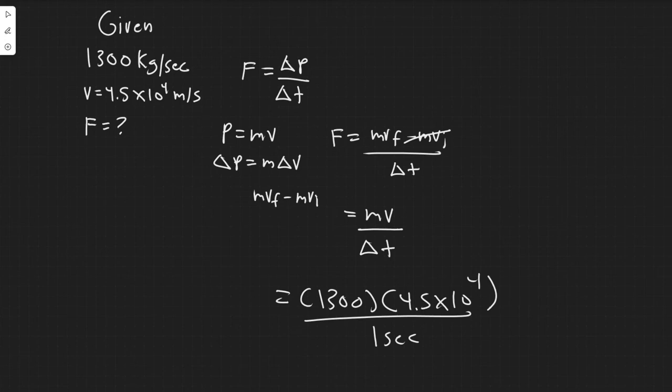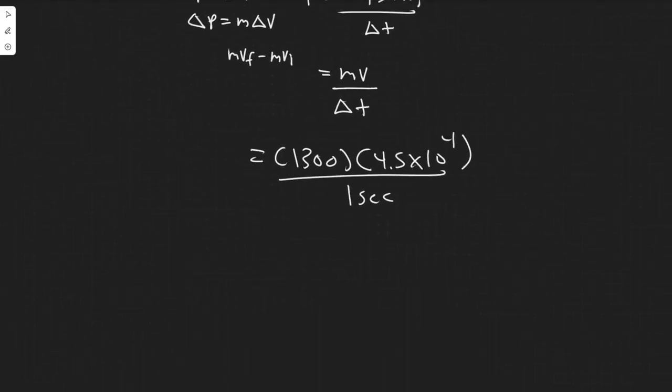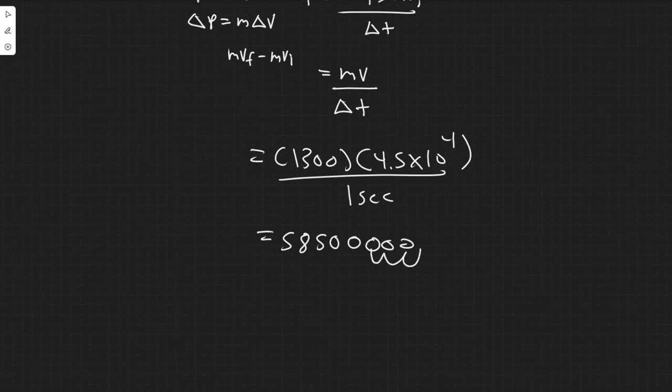So it's just 1,300 times 4.5 times 10 to the 4, which gives us a value of 5850000, which is 1, 2, 3, 4, 5, 6 zeros.